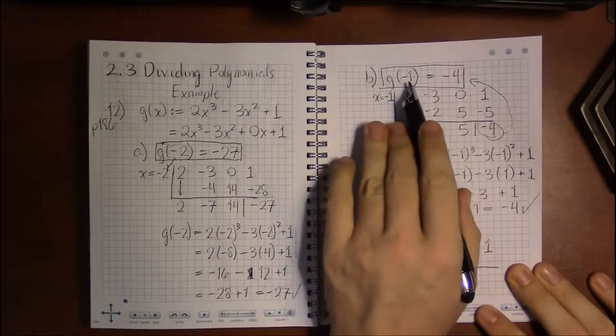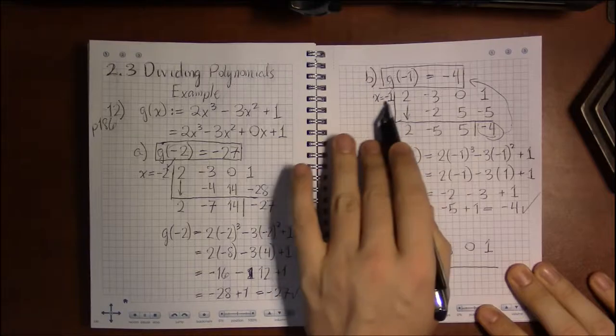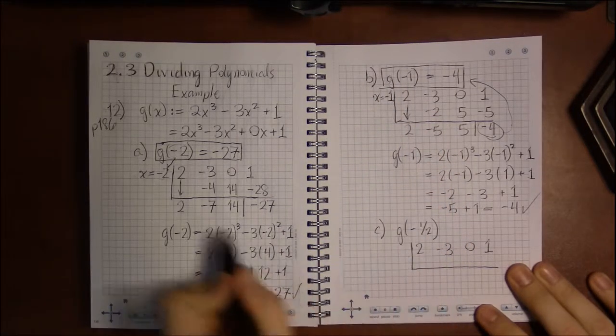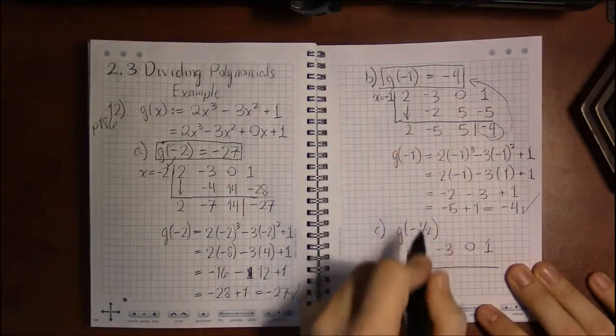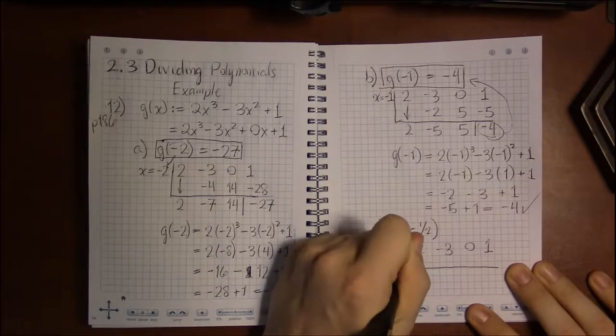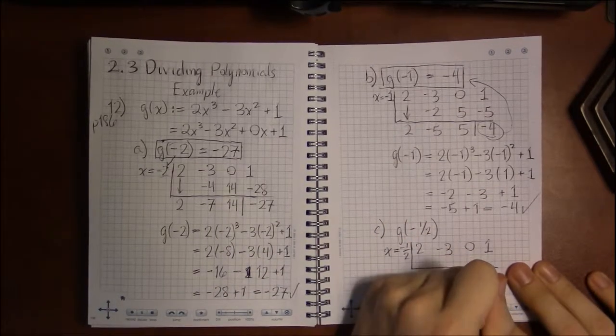But just like before, we changed the number on the left to be what was inside the parentheses here. So once again, it's not going to be minus 2. It's not going to be minus 1. It's going to be x equals minus 1 half.